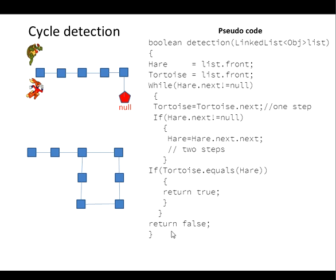Now let us simulate this program for two cases. First case: without a loop. Both hare and tortoise start at the beginning and traverse the list. As the hare sees the endpoint, it exits the loop and returns false, meaning no loop was found in this linked list.